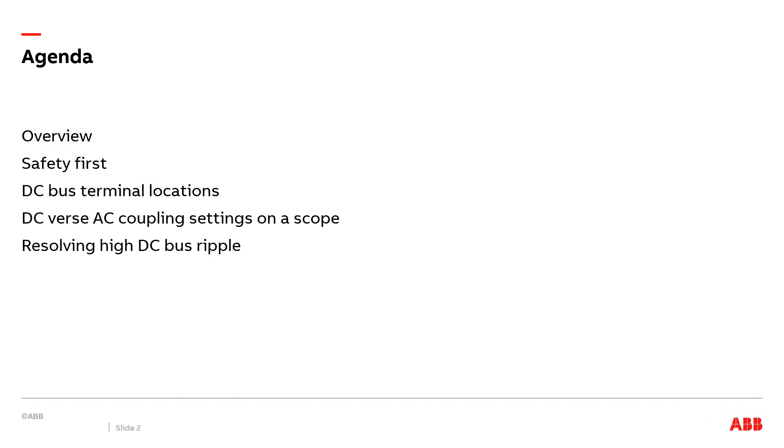We're going to start out this presentation with a brief overview of why it may be necessary to use an oscilloscope to look at a drive's DC bus voltage. We're then going to have a safety moment. We're then going to discuss where we physically hook up a scope on a physical drive itself. We'll then get into the main presentation on how to set up the scope and look at the differences between DC and AC coupling settings on a scope. And then we're going to end the presentation with when we have a high DC bus voltage ripple, how do we solve the problem depending on the cause.